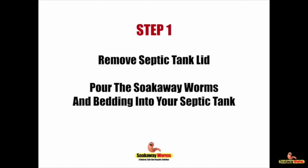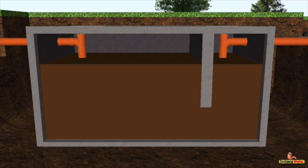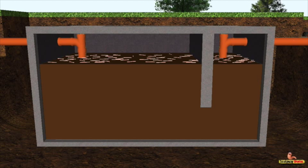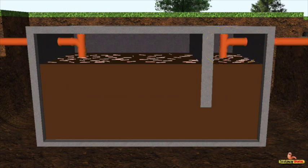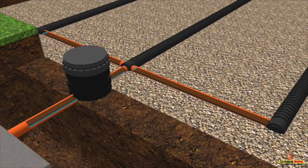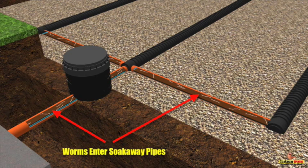Step one: remove the septic tank lid and then pour the worms and bedding into your septic tank or the nearest manhole chamber. Once the worms are in the septic tank, they will then start to breed and multiply, burrowing into the sludge and making their way slowly towards the soak away via the outlet pipe. The worms will continue to burrow and make their way through the sludge, continuing to work their way through those soak away pipes.